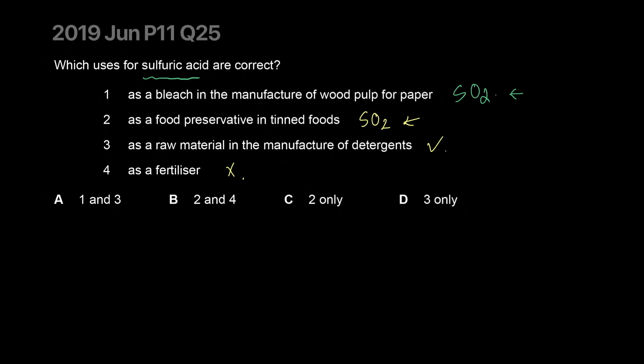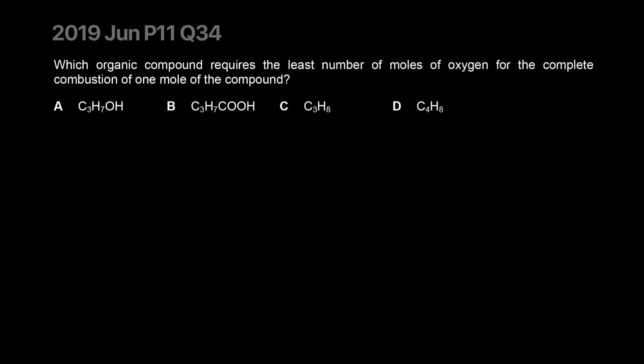So T wins. For the complete combustion of these organic compounds, which requires the least molecules of oxygen? The least amount of oxygen required would be something that has the most oxygen with it and the least number of carbons.